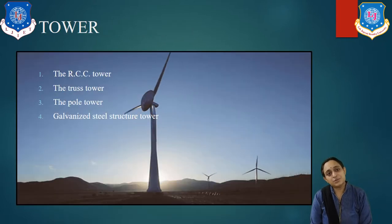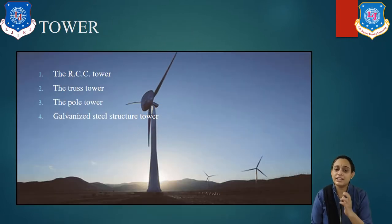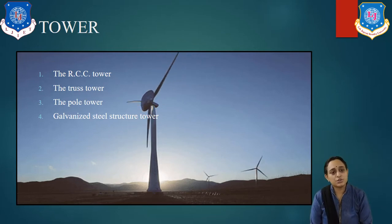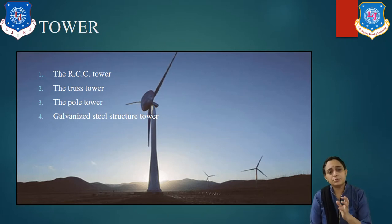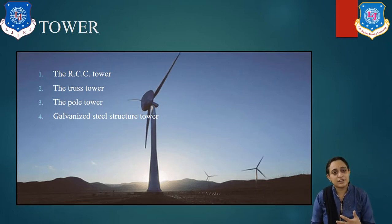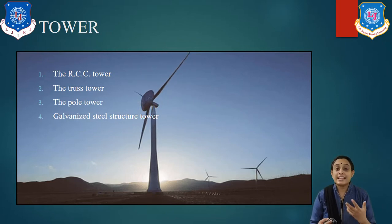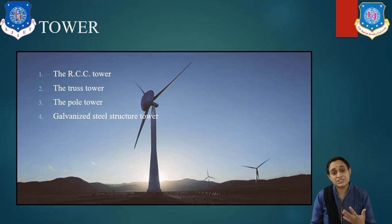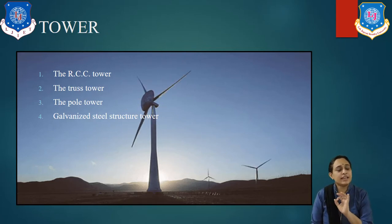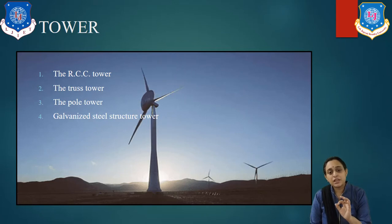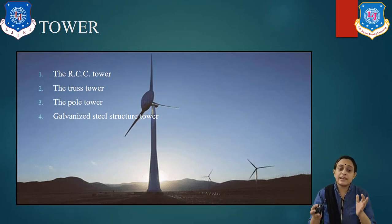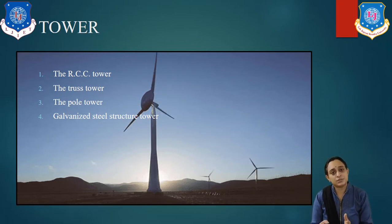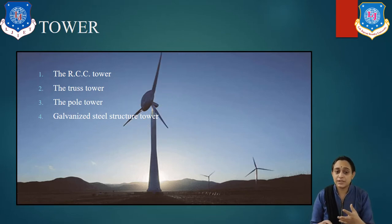Now, the windmill tower. In the horizontal axis windmill, the required height of the tower increases with the power rating of the wind turbine. Different types of towers are used: RCC tower, truss tower, pole tower, and galvanized steel tower. The tower is very important because the whole structure is mounted on it — the total weight and load of the system acts on the tower, so we have to be very specific in making towers.